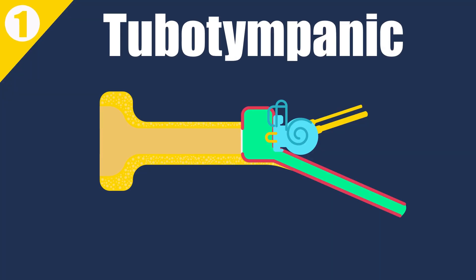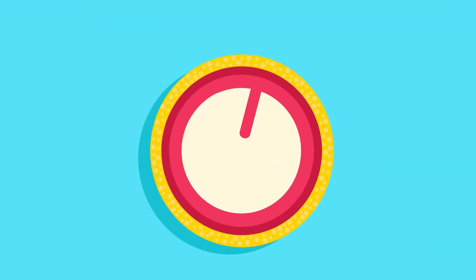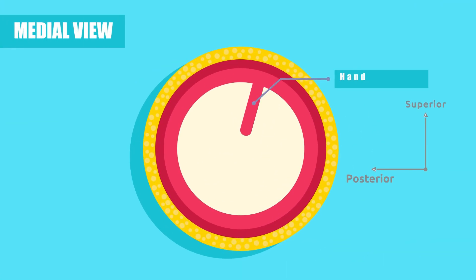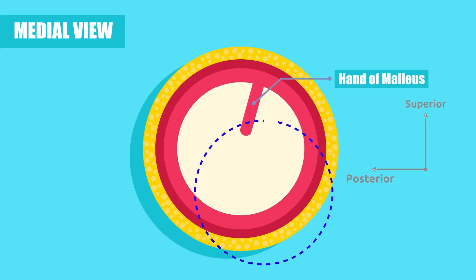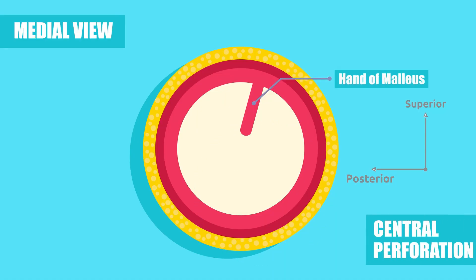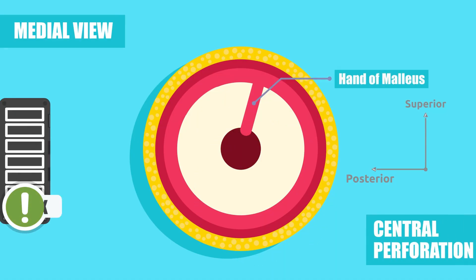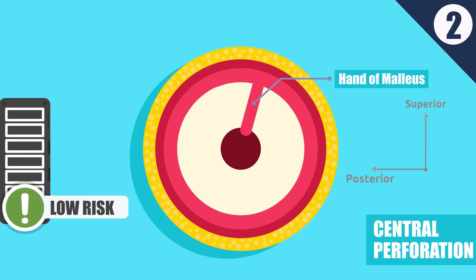Type 1: Tubotympanic — also called the safe or benign type. It involves the antero-inferior part of the middle ear cleft and is associated with central perforation. There is little risk of serious complications.